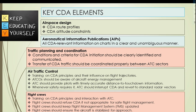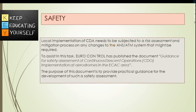Flight crews should keep the Flight Management System (FMS) updated, in particular after any intermediate level-off or track adjustment. Flight crews should ensure the aircraft is stabilized for approach; the aim is to convert CDA into a successful stabilized approach. Safety: local implementation of CDA needs to be subjected to a risk assessment and mitigation process. Eurocontrol has published guidance for the safety assessment of continuous descent operations implementation at aerodromes.